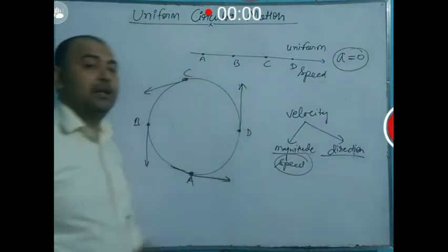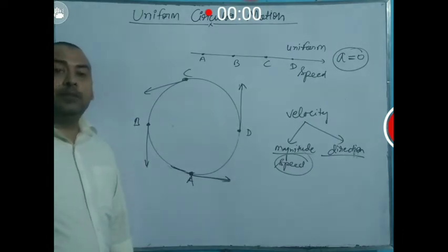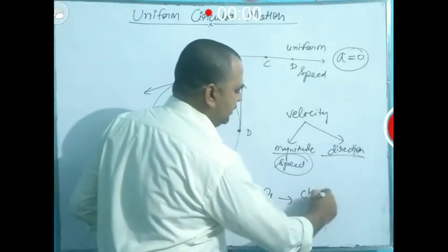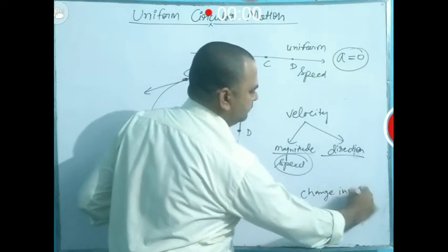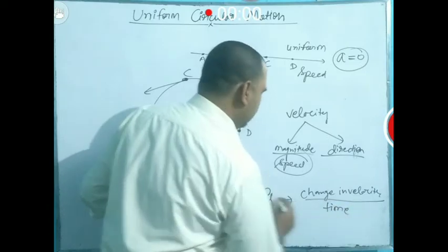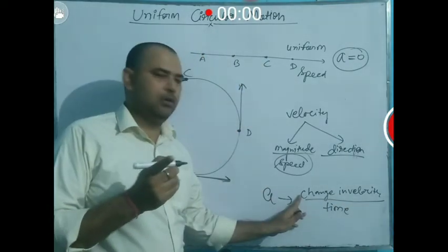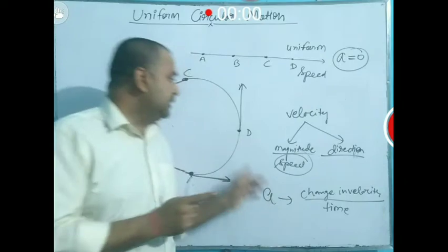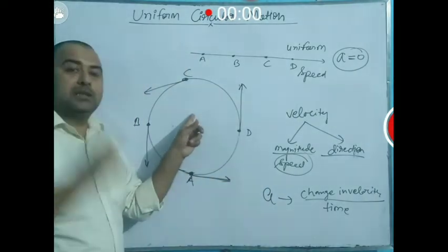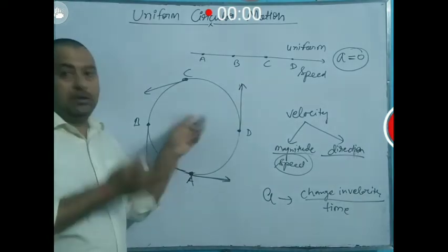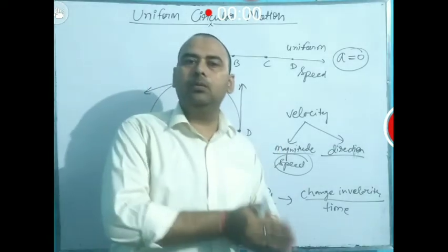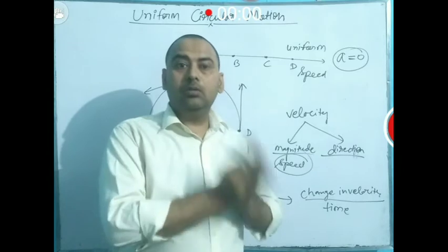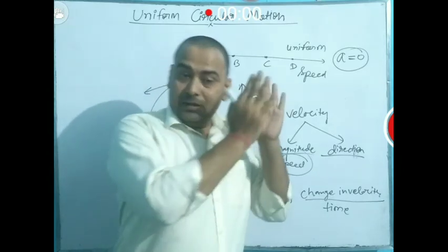If the velocity is changing, then the body has acceleration. We know that acceleration equals change in velocity divided by time. So when the velocity is changing, that means acceleration is present. The body moving in circular motion has acceleration, and this acceleration is uniform because the speed is constant and only the direction is changing.